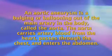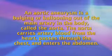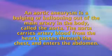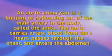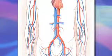An aortic aneurysm is a bulging or ballooning out of the main artery in the body, called the aorta. The aorta carries arterial blood from the heart, passes through the chest, and enters the abdomen. All of the major arteries in the body are branches off the aorta, including several important branches that come off the aorta in the abdomen.